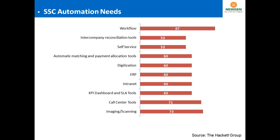In a global survey done by the Hackett Group, we found the key automation needs that global shared services and CFOs are looking for to overcome those challenges. The number one need is workflow — a key driver for process optimization and process automation. Thereafter: inter-company reconciliation tools, imaging and scanning, call center tools, KPI dashboards, ERP digitalization, automatic matching and payment allocation, and self-service portals all play an important role together.